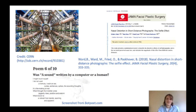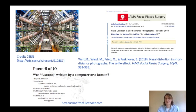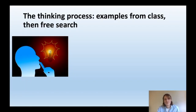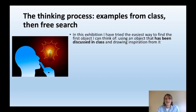Looking back at my collection, two of the three objects are digital — a screenshot of the abstract of the article published in the Facial Plastic Surgery journal, and a screenshot from the website containing the AI-generated poem. It is allowed to have digital objects as long as they have a specific real-world context behind them. To reflect on the thinking process: I started with examples considered in class and then went along the road of free search.